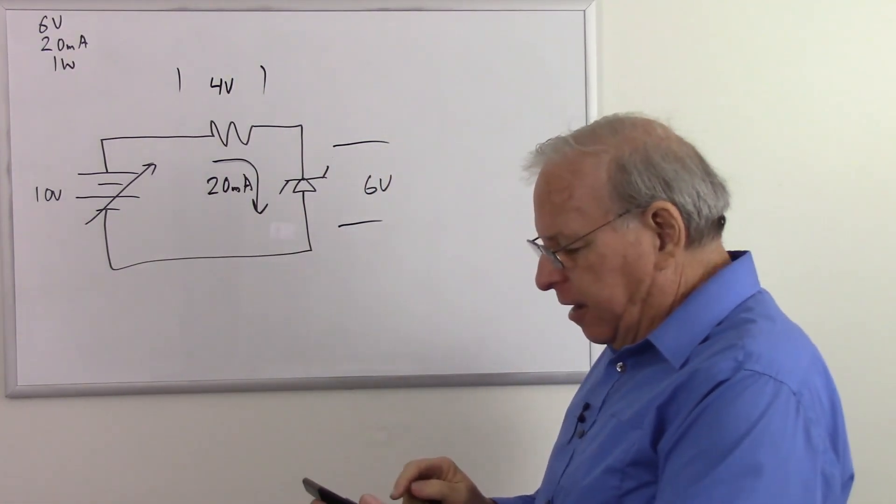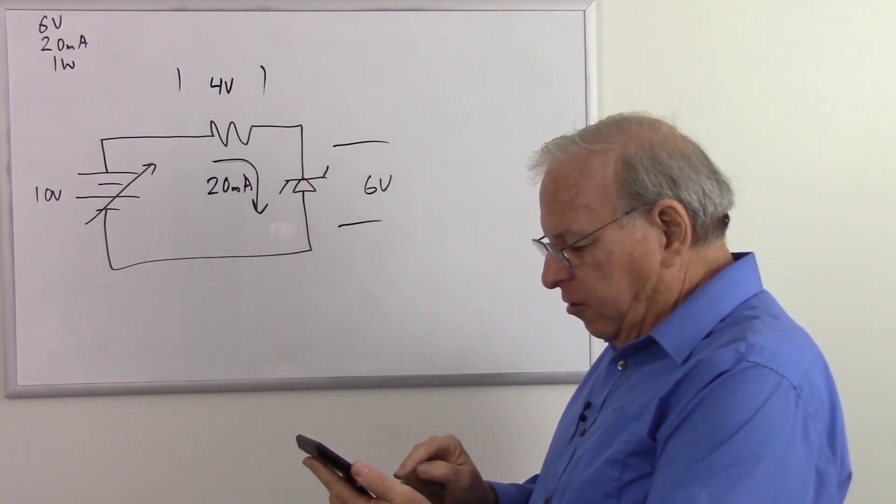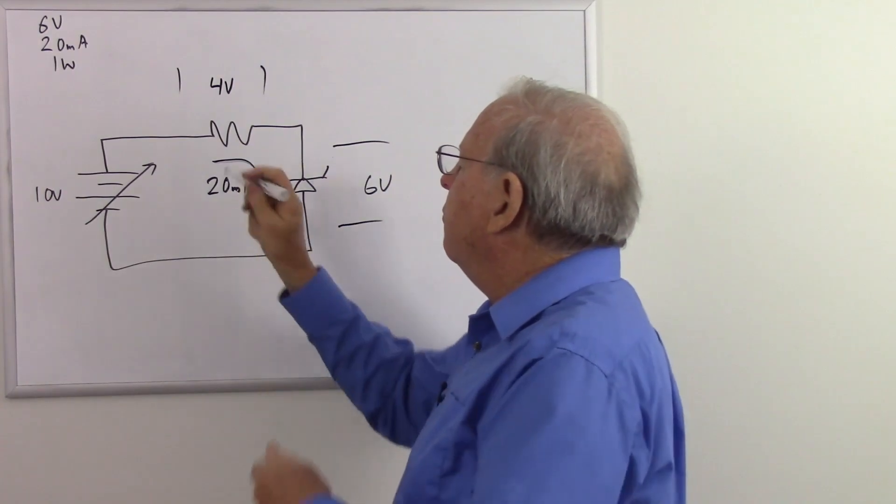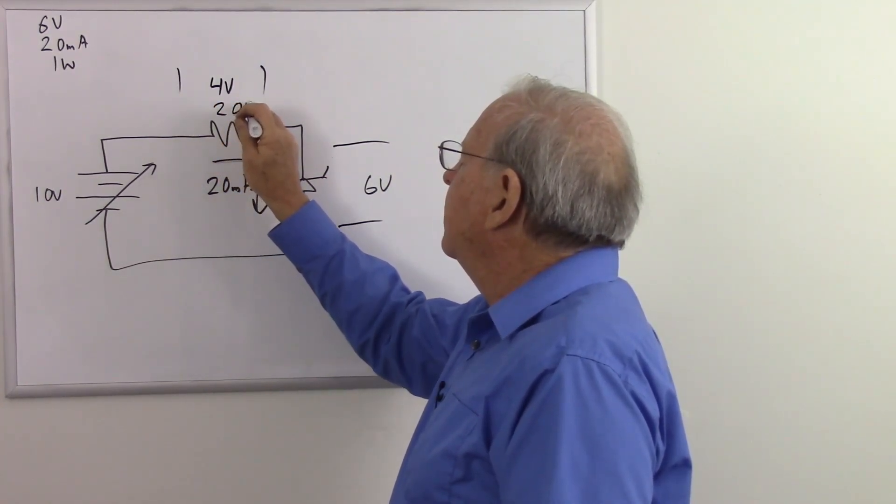Well, it's pretty simple. Remember Kirchhoff's voltage law says that this voltage plus the voltage here must add up to our source voltage. So if we have 6 volts here and 10 volts there, that means we have 4 volts there. So now we know the voltage and the current and we can calculate that out. So I pull out my trusty calculator. 4 divided by 0.02 equals, and we want a 200 ohm resistor.